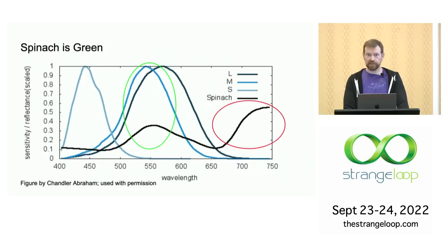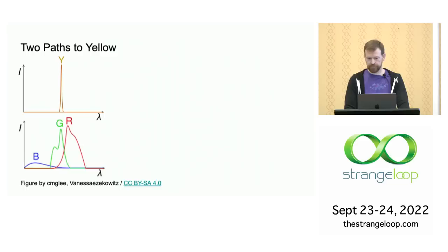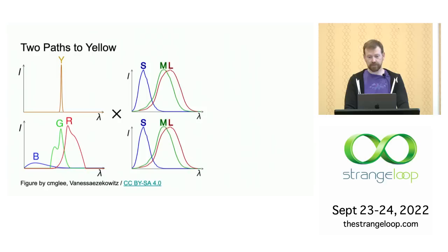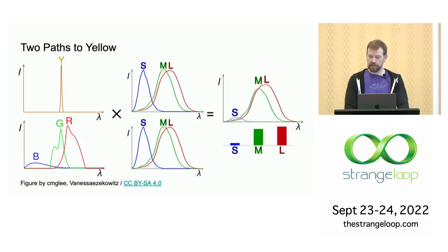For every color we see, there are many wavelength distributions which similarly stimulate the three cone types. Consider these two cases that we see as yellow: on top, a single wavelength; on the bottom, a distribution of red, green, and blue lights. However, in both cases, multiplying these distributions by the cone's spectral sensitivity gives the same response — minimal stimulation of the short cones and significant stimulation of both medium and long cones — resulting in the same sensation of yellow.